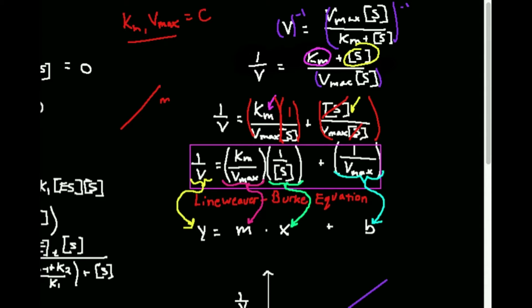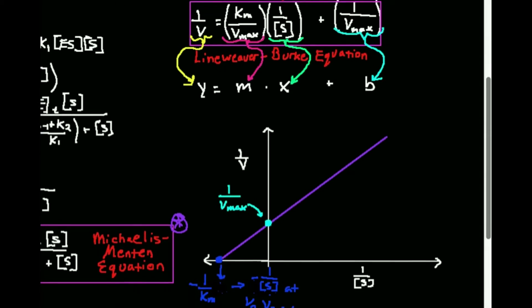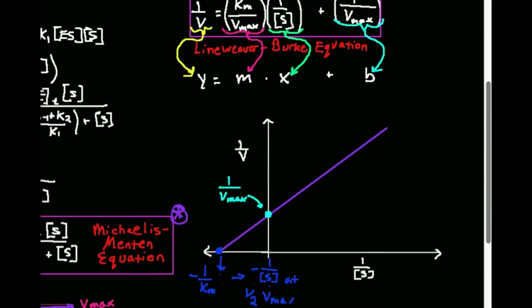We'll look at real data in another video, but for now we're going to look at the general form of a Lineweaver-Burk plot. Unlike a lot of other plots you see in chemistry and physics, for this one you do have to use this quadrant over here, but you're actually going to have to go into the negative side a little bit also.